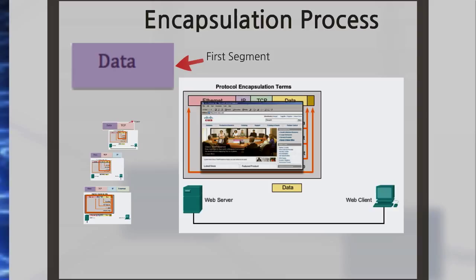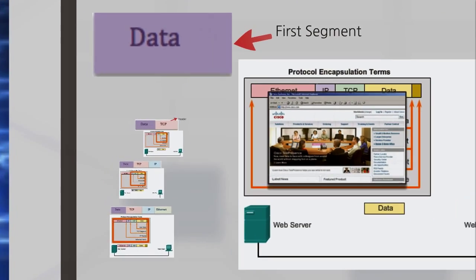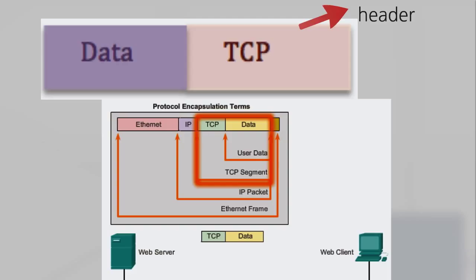In the web server example, we can use the TCP/IP model to illustrate the process of sending an HTML web page to a client. The application layer protocol HTTP begins the process by delivering the HTML-formatted web page data into the transport layer, where the application data is broken into TCP segments. Each TCP segment is given a label called a header, containing information about which process running on the destination computer should receive the message. It also contains information that enables the destination process to reassemble the data back to its original form.